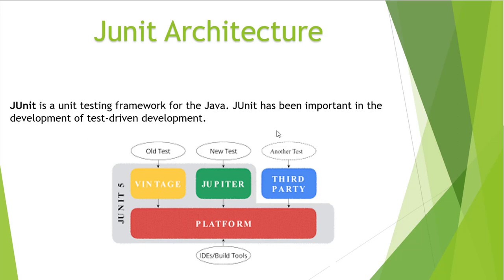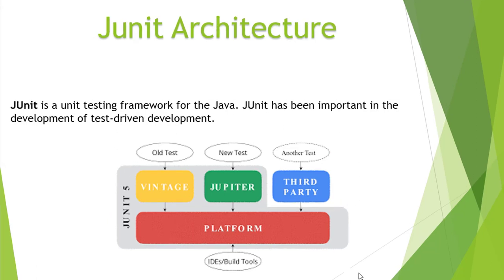So let us see the architecture of JUnit. This diagram defines the JUnit architecture. JUnit 5 is our latest version and the previous version was JUnit 4. As we all know Java is updating day by day and there are a lot of things changing, like lambda expressions and other things. JUnit 4 is about 10-12 years old and does not support all the new things coming in Java. That's why they created JUnit 5, which also provides integration of old JUnit 4 test cases.